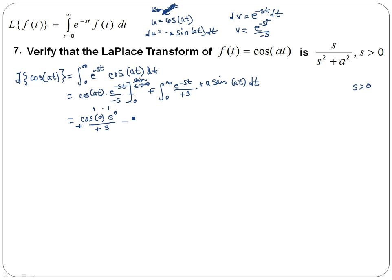Bringing up the constants, I have a over s times the integral from 0 to infinity of e to the negative st times sin(at) dt. That gives me 1 over s minus a over s times that integral.